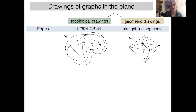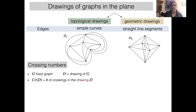We consider drawings in the plane of two different types: topological drawings where the edges are curves, and geometric drawings, which are also known as rectilinear drawings, where the edges are straight line segments. We are interested in their crossings.